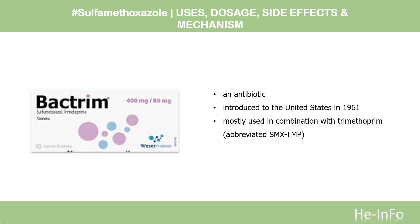Sulfamethoxazole is an antibiotic. It is used for bacterial infections such as urinary tract infections, bronchitis, and prostatitis, and is effective against both gram-negative and gram-positive bacteria such as Listeria monocytogenes and E. coli. It was introduced to the United States in 1961.